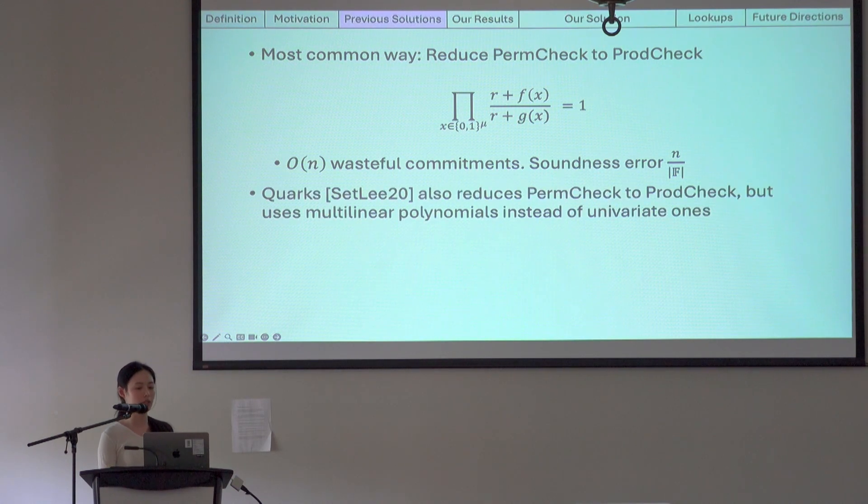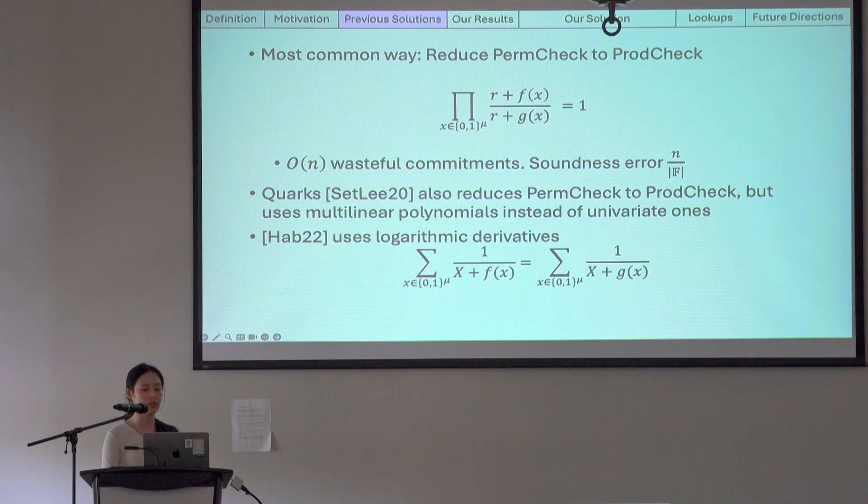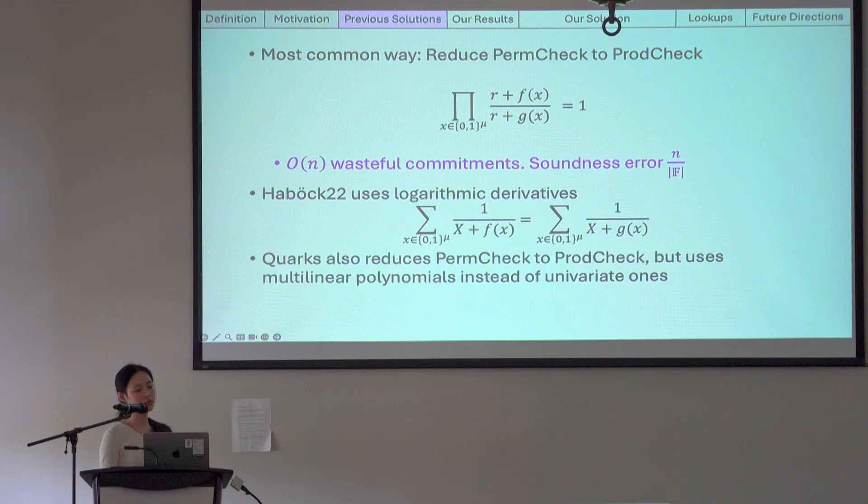There was work in 2020 called Quarks, which also reduces perm check to product check, but uses multilinear polynomials instead of univariate ones. And in 2022, Havoc introduced an alternative way, largely known as logup, to perform permutation check by using the logarithm derivatives of product check. However, in all of these works, the linear wasteful commitment cost and the n over field size soundness error persist.